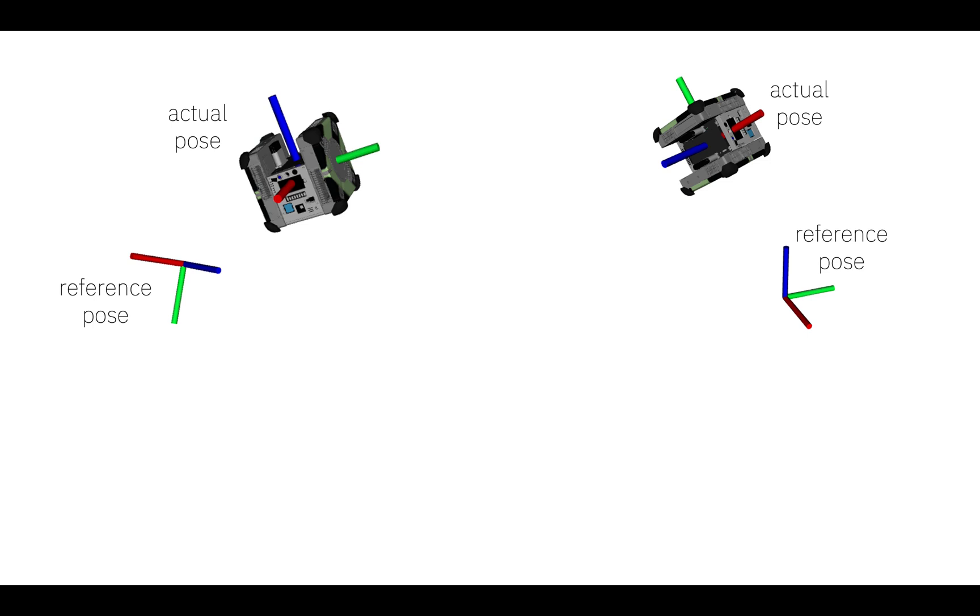Therefore, it's helpful to share experience across all equivalent state-action pairs. For example, this space robot's dynamics do not depend on its absolute position and orientation, and neither does the error between the physical and reference states.